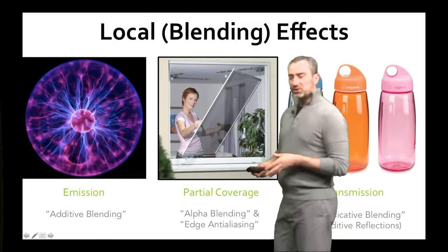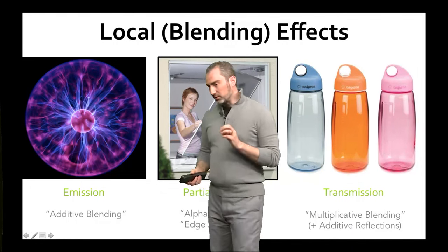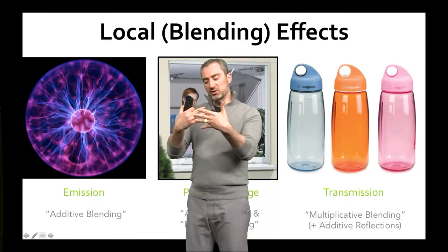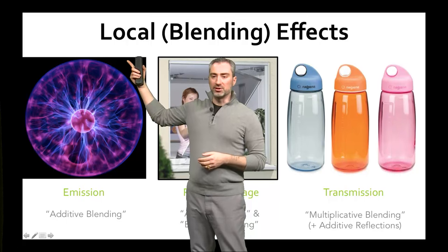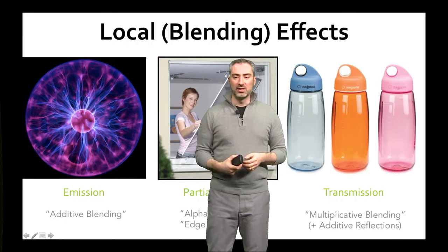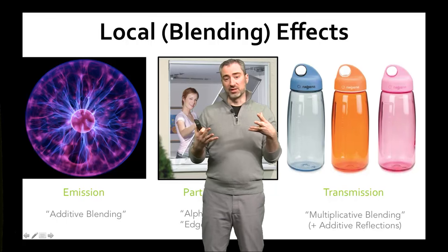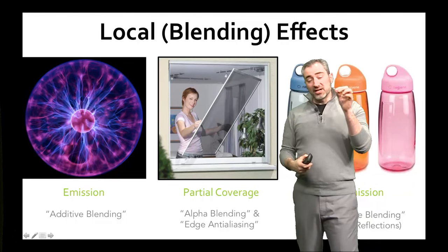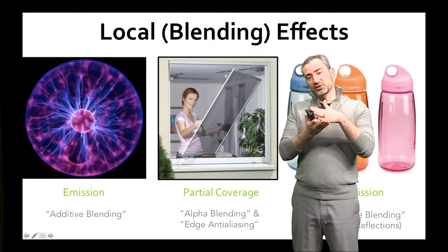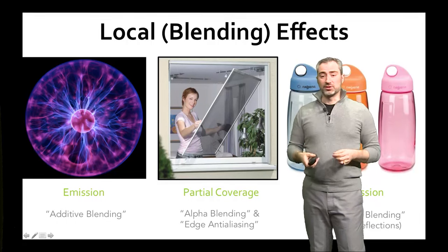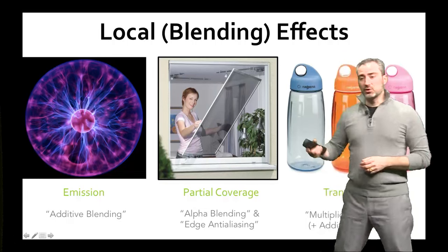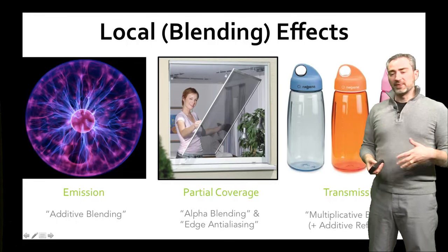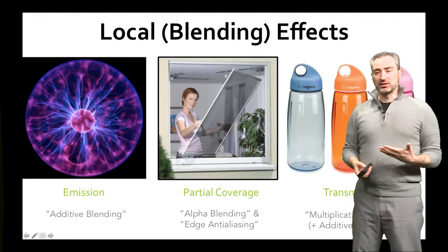Here are the kinds of effects that we see from transparency. There are three local blending effects, which are cases where different surfaces at the same pixel overlap and need to be blended together to create the final image. One is emission, also referred to as additive blending, where there's a transparent medium that itself is emitting light and glowing. There's partial coverage, such as a window screen, edge anti-aliasing where a polygon cuts through the middle of a pixel, and thin surfaces like a telephone wire. And then there's transmission for things like glass or clear plastic, which has a full color associated with it. Surfaces that transmit light often reflect light as well.